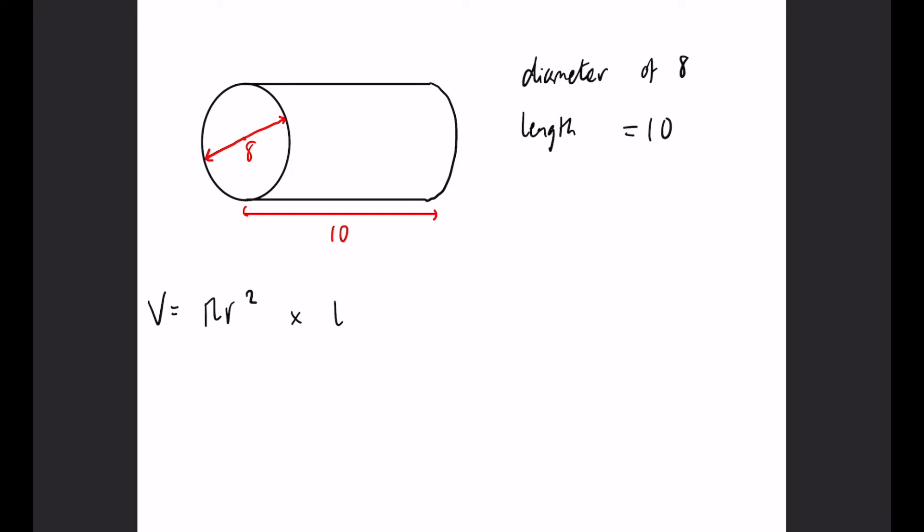Now, if the diameter is 8, if we half that, the radius would be 4. By substitution, we want to do 4² multiplied by π, multiplied by that length signified by the 10 there.